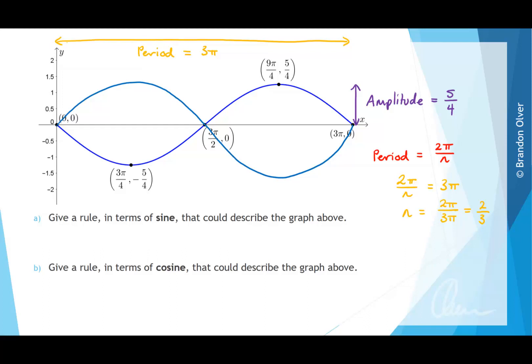And to do that, we need to introduce a negative sine at the front of the rule. So our rule could be y equals negative, and then 5 over 4 is the amplitude, which is the number that multiplies the sine function.